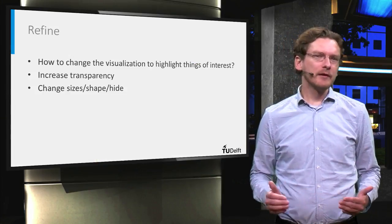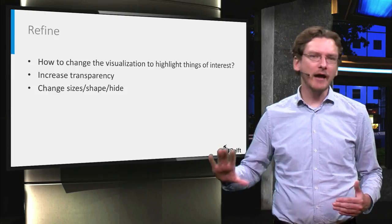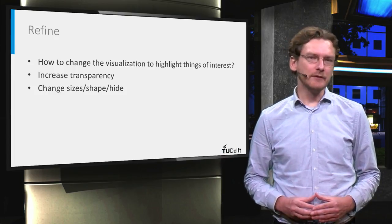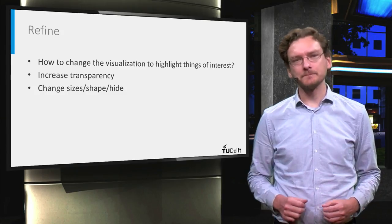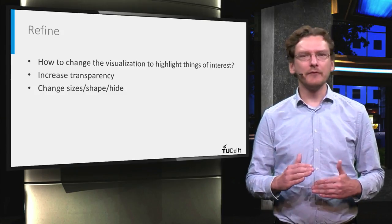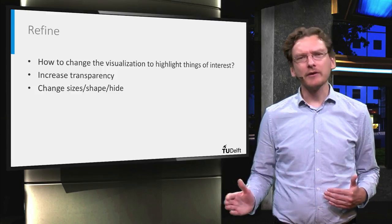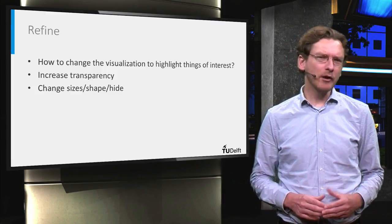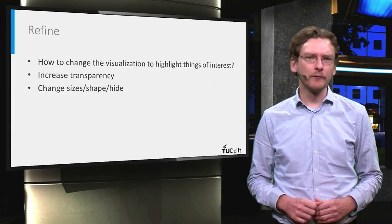For the refine step, this is a question of how to change the visualization to highlight things of interest, and this step can also relate to the output of the previous steps. For example, when selecting a subset of the data, you may want to make the rest of the data more transparent in order to de-emphasize it, or create objects that become larger when you place your mouse over them.